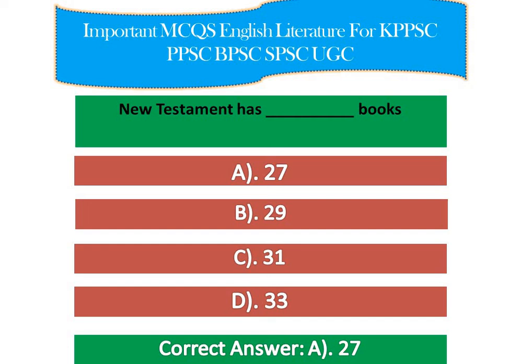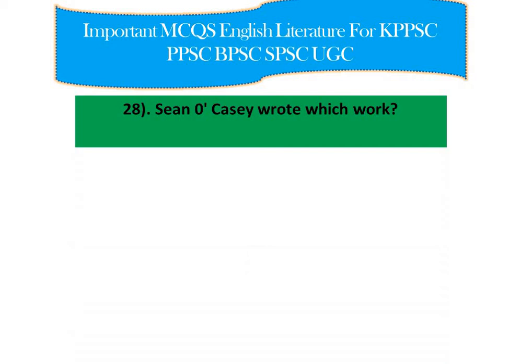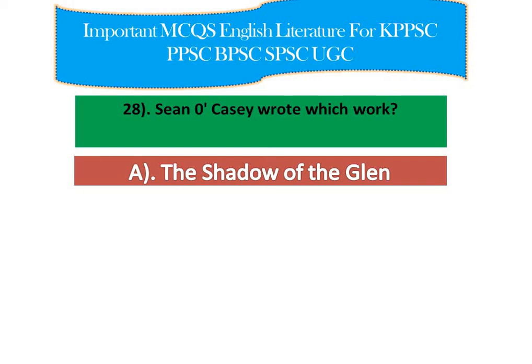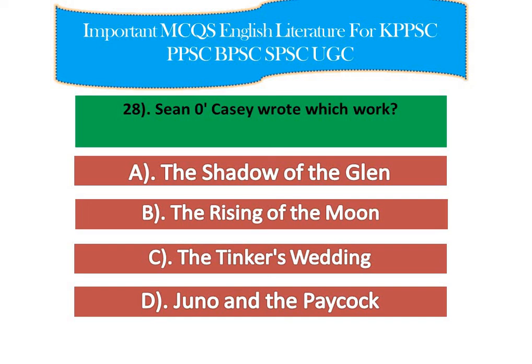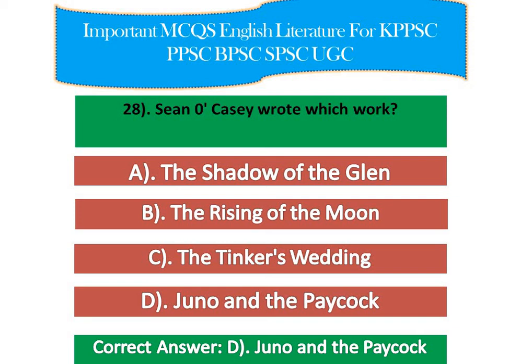The third question: Sean O'Casey wrote which of the following — 'The Shadow of the Glen', 'The Rising of the Moon', 'The Tinker's Wedding', or 'Juno and the Paycock'? The right answer is option D — Sean O'Casey wrote 'Juno and the Paycock'.